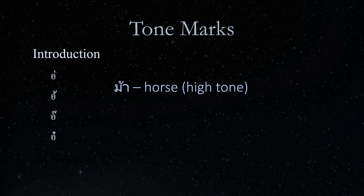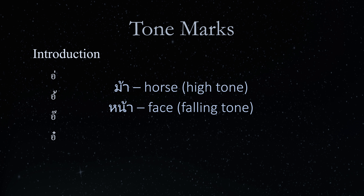If the syllable begins with two consonants that form a cluster, the tone mark is written above the second consonant. MAI, meaning face, begins with a consonant cluster of the high-class consonant HOHIB and the low-class consonant NONU. The tone mark MAI TO is written above the second consonant NONU. HOHIB is silent in this case, so the word is pronounced NA in the falling tone.